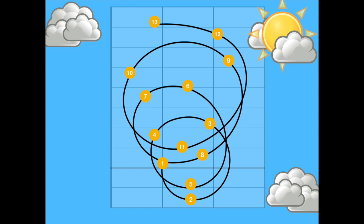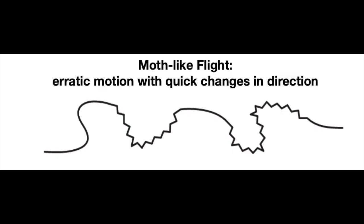Our final flight pattern is moth-like flight. When birds are flying around the sky and chasing insects to eat, their flight pattern looks very erratic with sudden changes in direction. Our melody will also show quick changes in direction and sudden variation between faster and slower rhythms that start and stop. Let's watch and listen to moth-like flight.